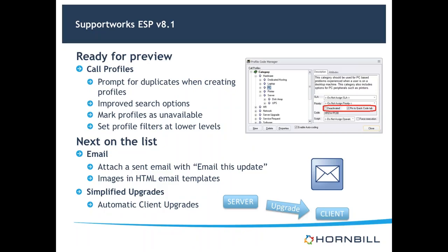The next email-related feature is images within templates. There are some features for that currently, but we're going to do more enhancement. This may involve email signatures — setting up a signature that becomes more generic. It's about making communication personal: your own logos, a specific banner, so the service desk can send out communications in a more pictorial manner. Customers are more likely to pick up information from that rather than just a typed message.